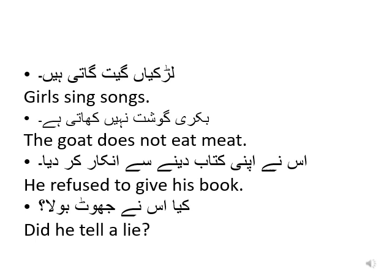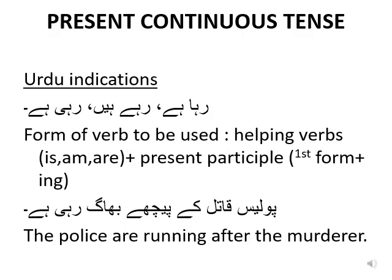Your time is up. These are the answers. The next tense is present continuous tense. The Urdu indications for present continuous tense — your Urdu sentences will end in either 'raha hai', 'rahi hai', or 'rahe hai'. The main verb which we use is the present participle, which is the first form of the verb with '-ing'. With that we use the helping verbs 'is', 'am', or 'are'. The translation for 'police katil ke piche bhaag rahi hai' is 'the police are running after the murderer', using 'running' as the present participle and 'are' as the helping verb.